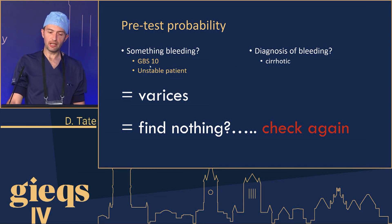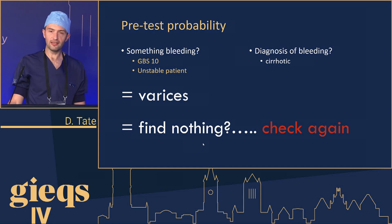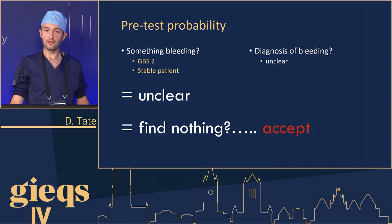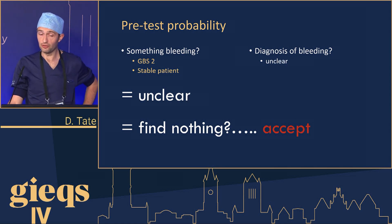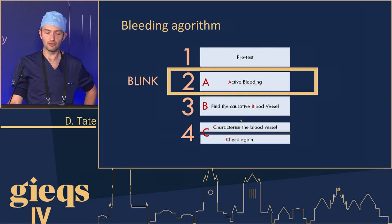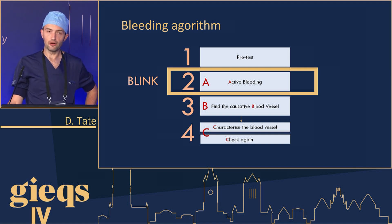If you have a patient with a Glasgow Blatchford Score of 10 who is unstable and you find nothing, maybe you should spend more time looking, or consider carefully that you have missed something. Whereas if you have a patient with a Glasgow Blatchford Score of 2 who is stable and you don't find anything, then with careful checking that may be something you could accept.